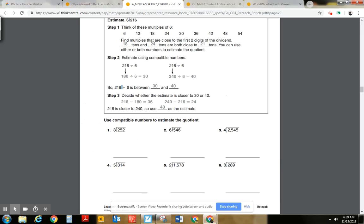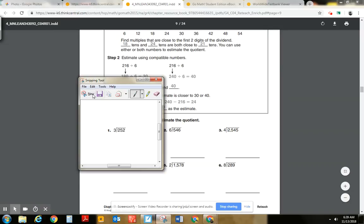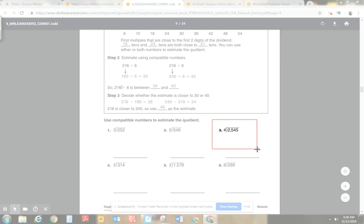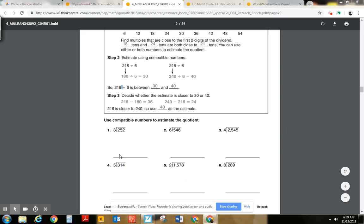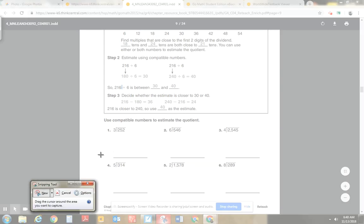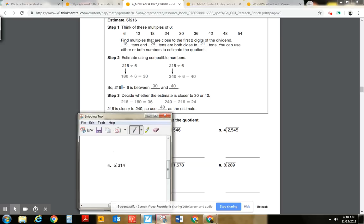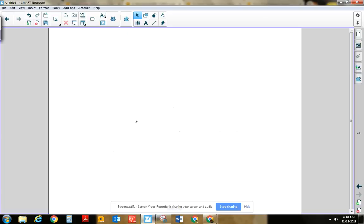Let's take a look at another one. So actually, let's skip that one for now. Let's go to number 4 here. We'll come back to number 3. Let's take a look at number 4 here. And remember, we are estimating. So I want to know about how many fives will fit into 314 using compatible numbers. So I'm going to write out my multiples of 5.